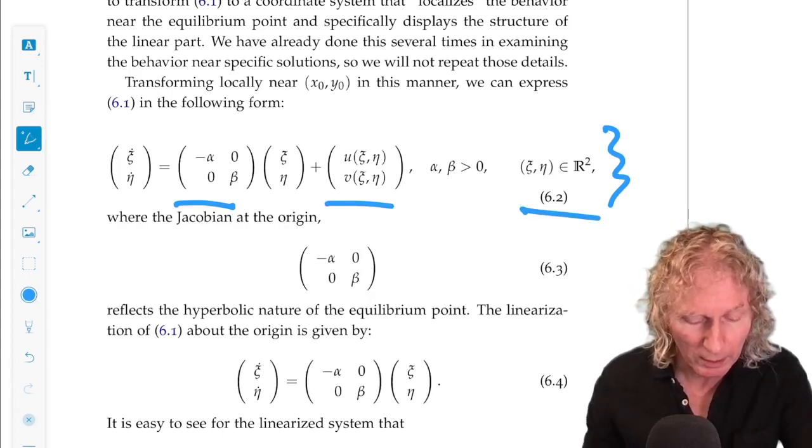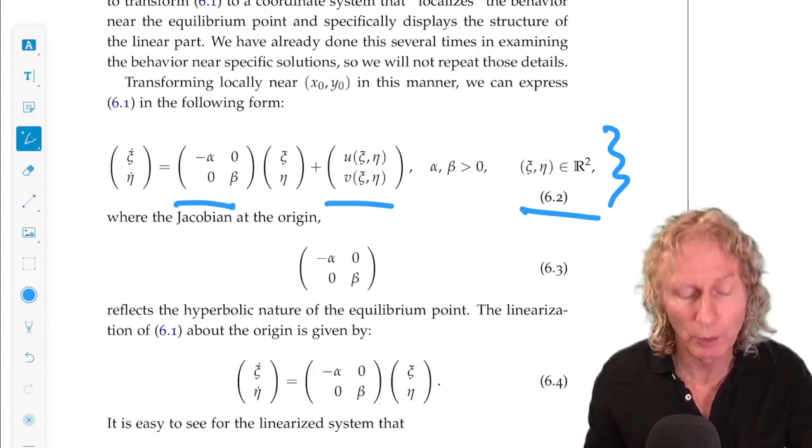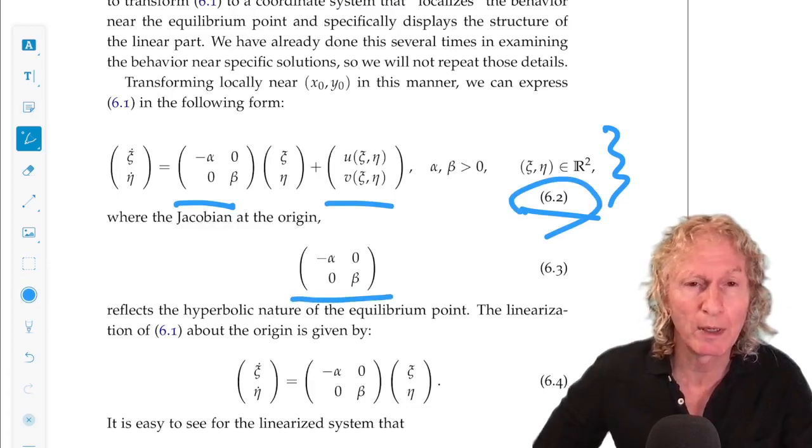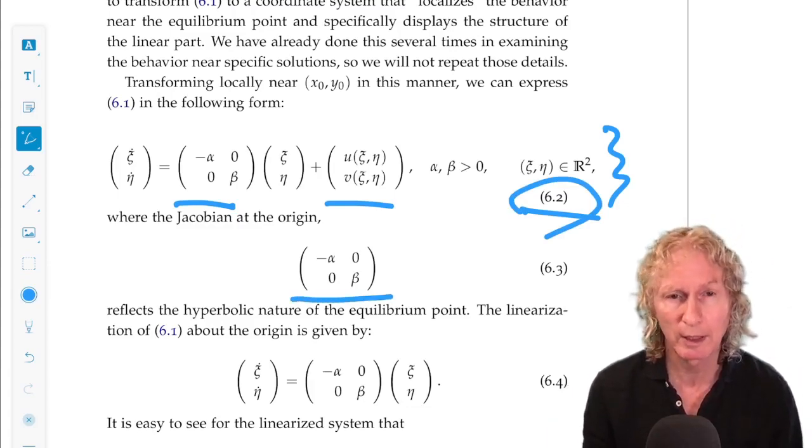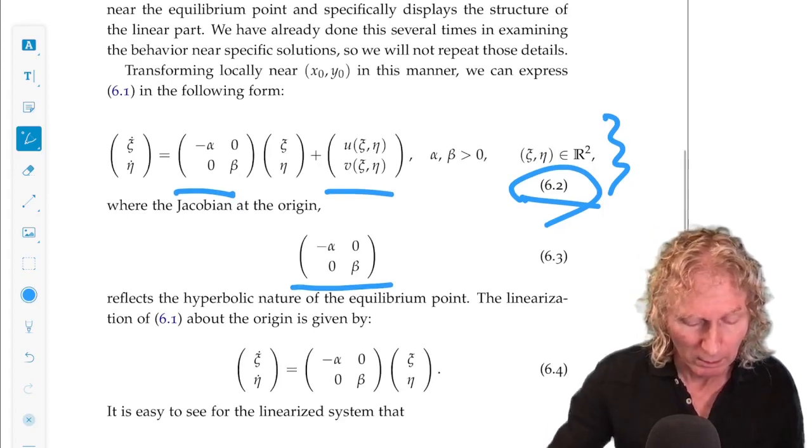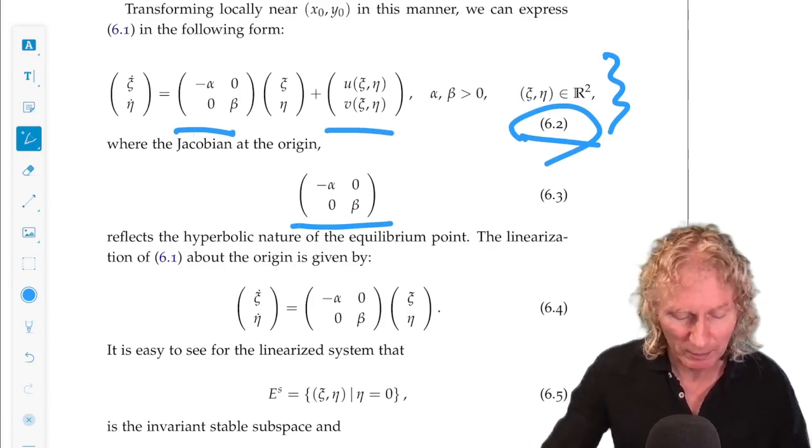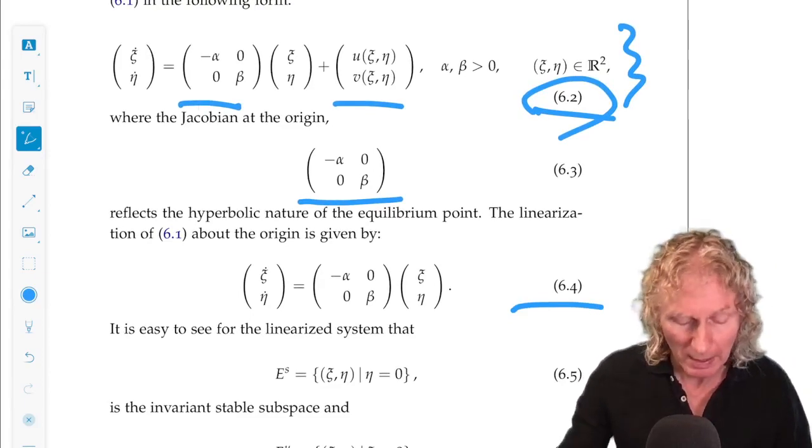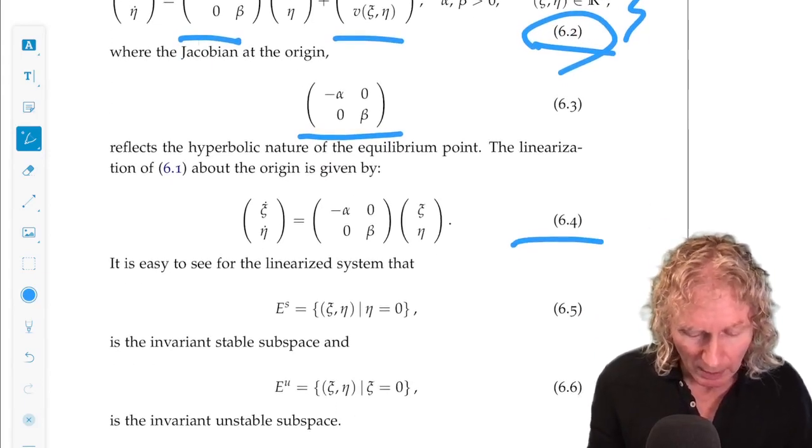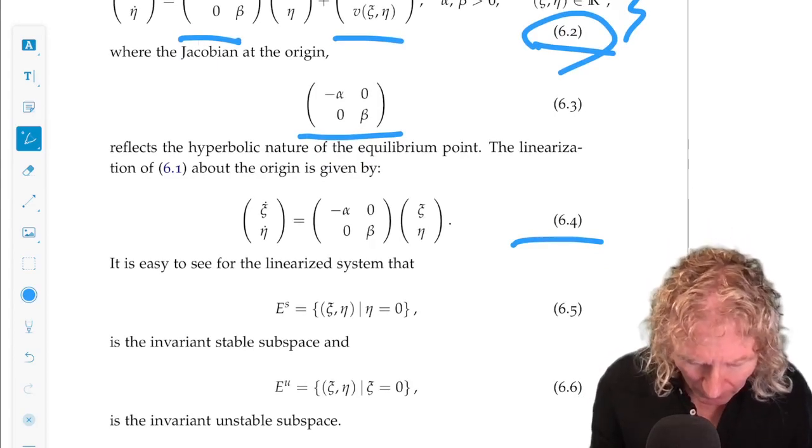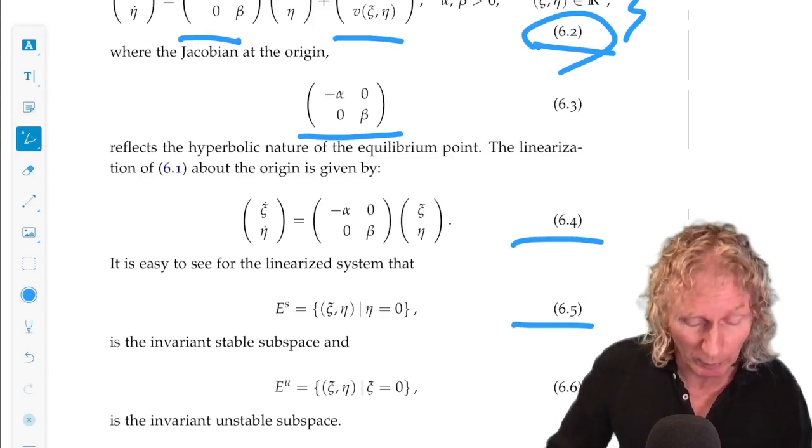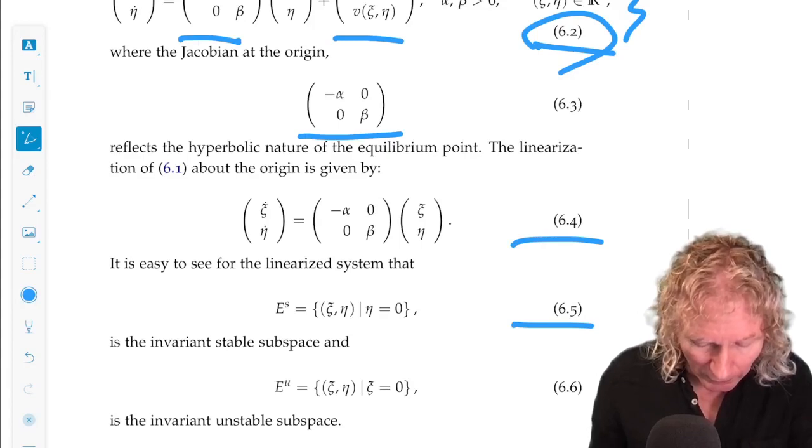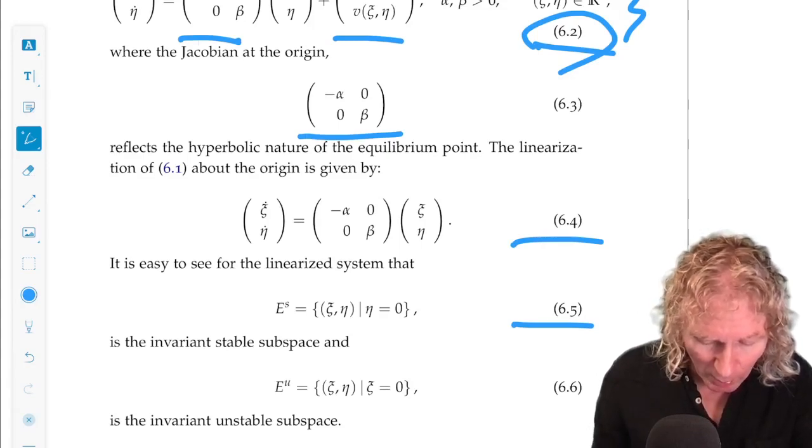So, the Jacobian at the origin, the origin is now the new equilibrium point for 6.2, is given by this expression, α and β are positive. And so, this reflects the hyperbolic saddle point nature of the equilibrium. So, the linearized vector field is given by 6.4, and we see that the ξ axis, the horizontal axis, is the stable subspace and invariant subspace. And the vertical axis, the η axis, is the unstable invariant subspace.